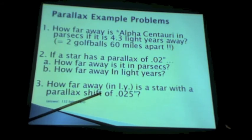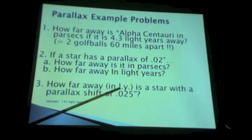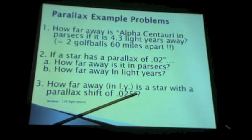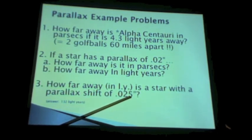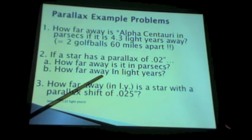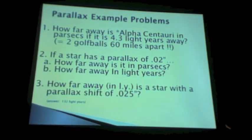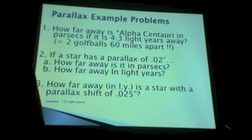And then we did this one, which puts the two steps together. How far away in light years is a star with a shift of 0.025 arcseconds? You flip it to make it parsecs first. When you flip it, you get 40 parsecs. Then you multiply by 3.3 to get 132 light years. I'm going to show you something you may not have ever seen before. I'm going to show you our neighborhood.